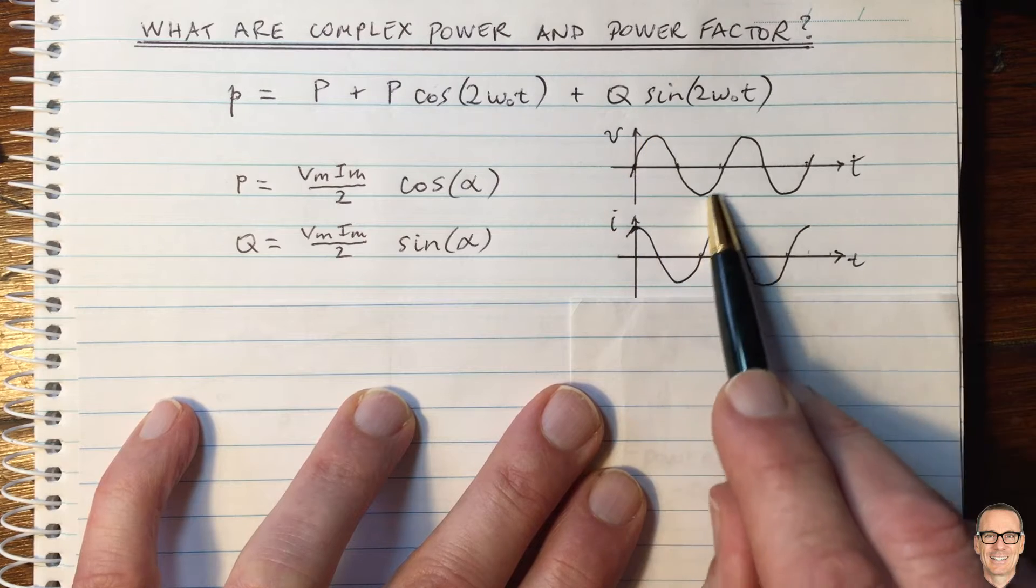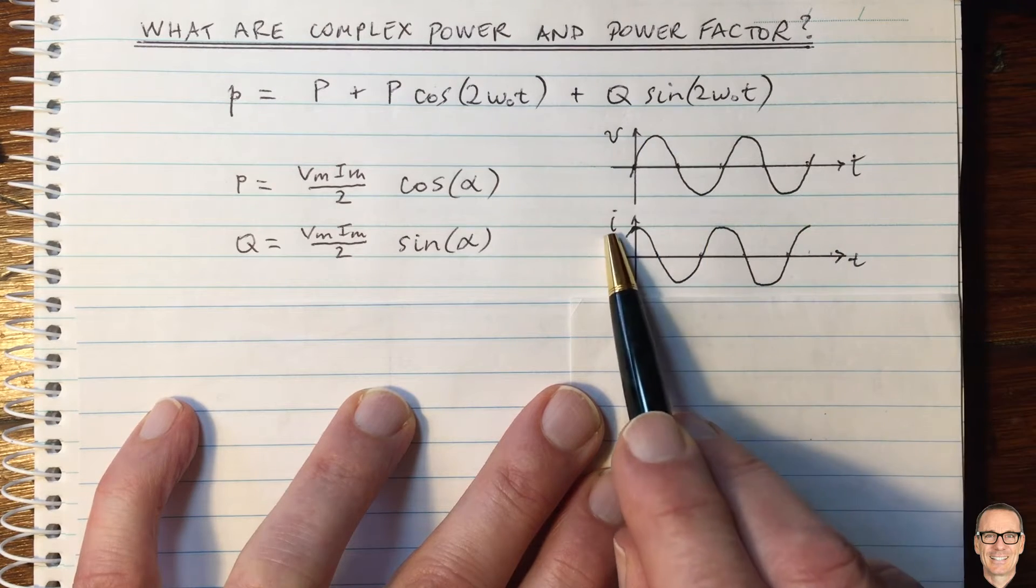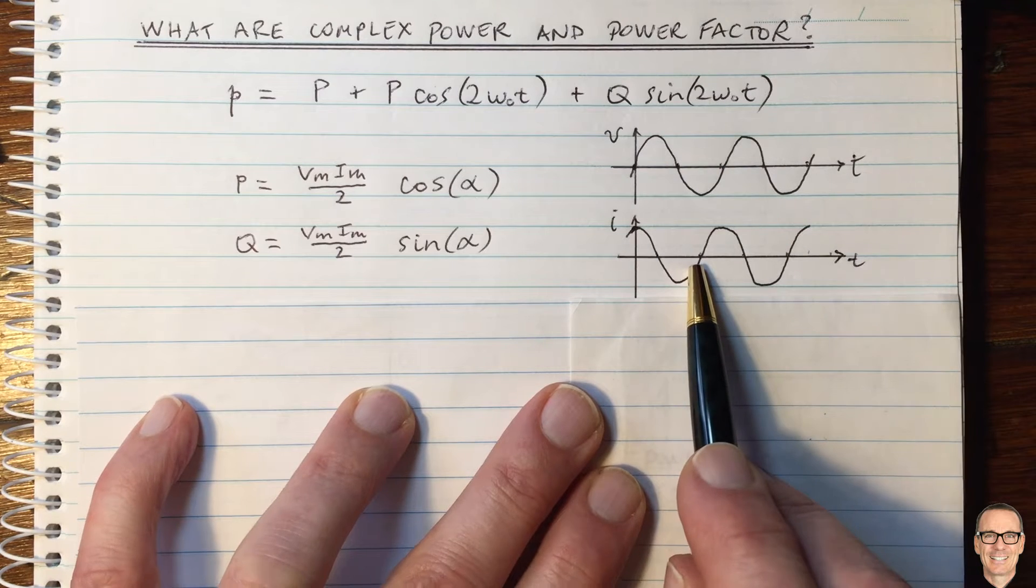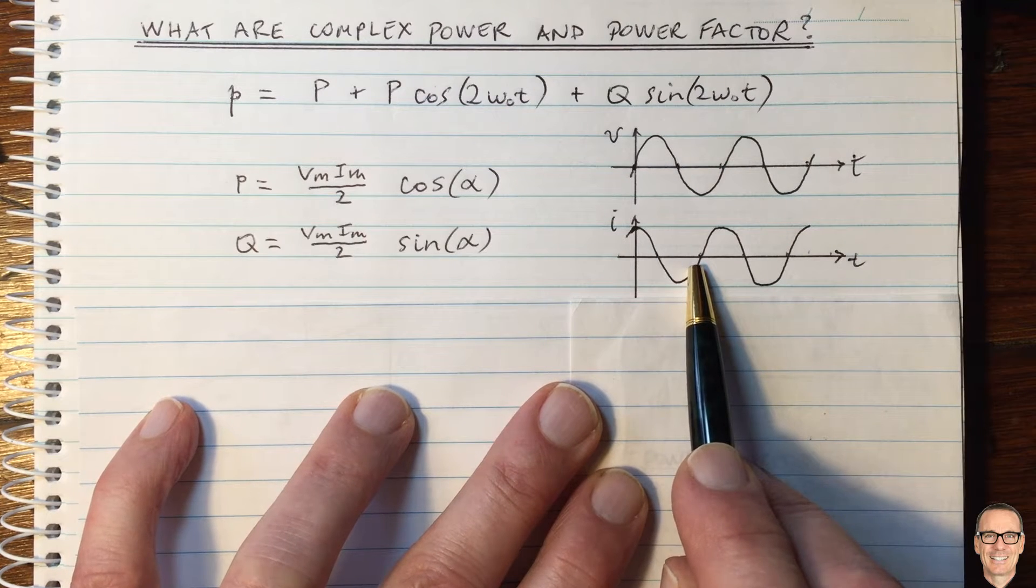And so here, for example, this one is a sine wave for the voltage and the current here is a cosine wave. So these ones, as I've drawn them here, are 90 degrees out of phase.